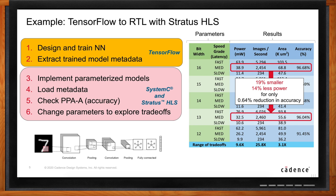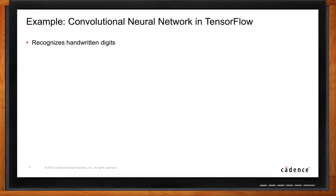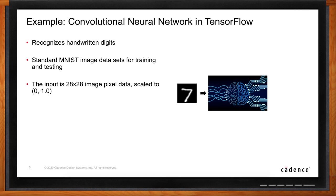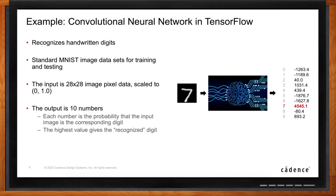Do you have a real-world example of what this looks like? Yes — we'll talk about a convolutional neural network that recognizes handwritten digits. This is the standard Modified MNIST image recognition test. There are datasets for training and testing. The input is a small image of a handwritten digit, like you'd see in a check deposit application, and the output is 10 numbers representing the probabilities for each digit — the highest number is the recognized digit. In our example, we chose a specific implementation in TensorFlow and took it all the way to RTL.